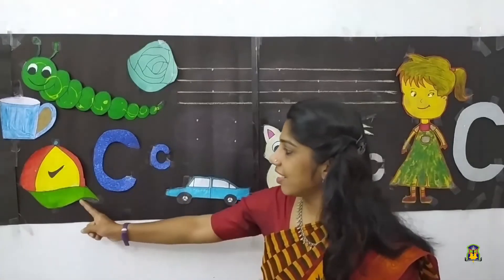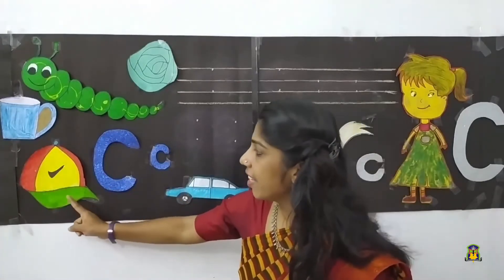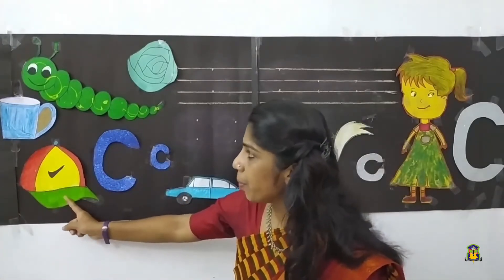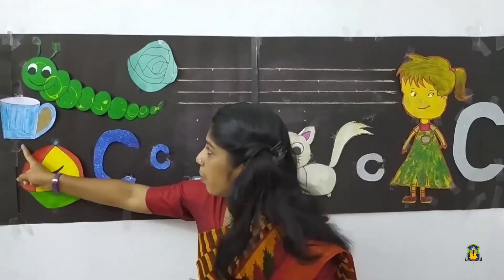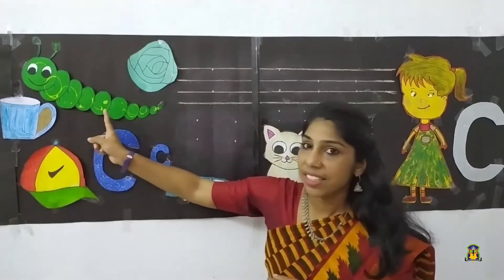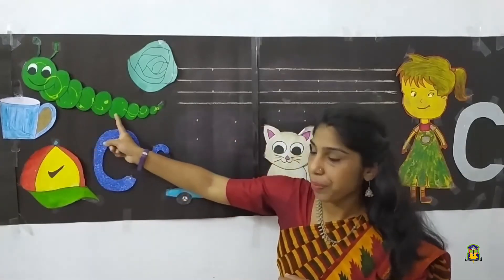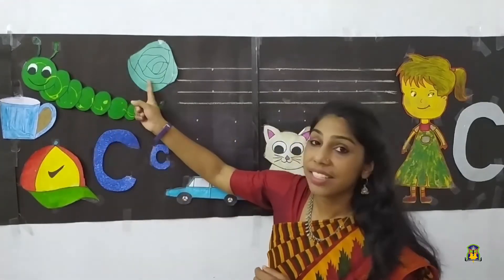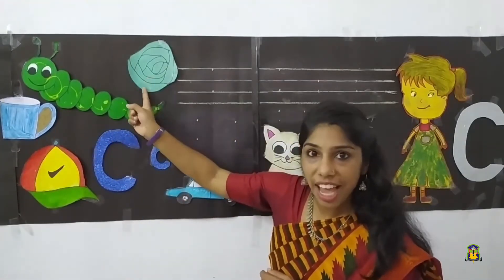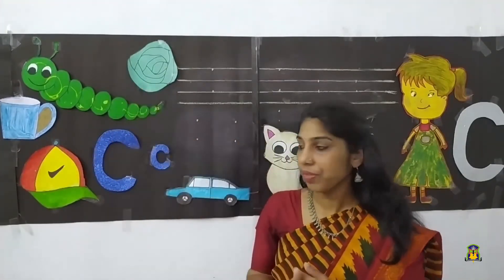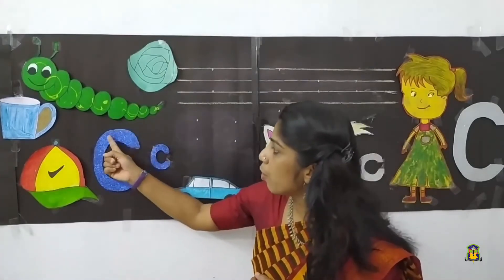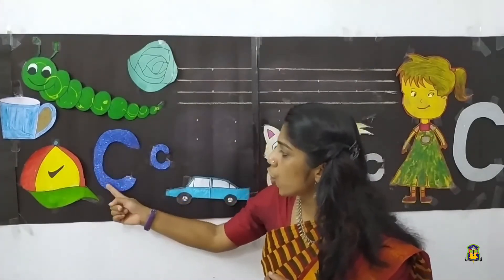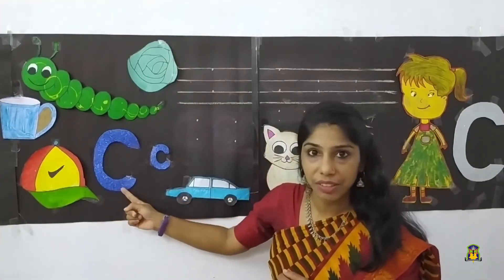And C. C says K — car, cat, caterpillar, cabbage. C is an example of a right open curve.